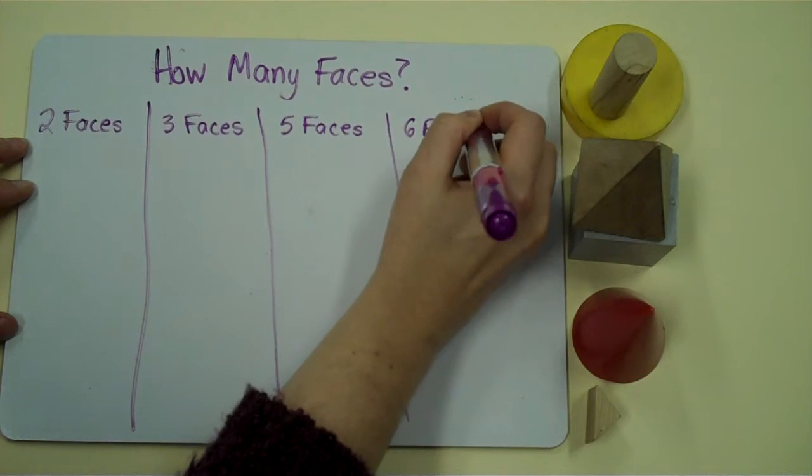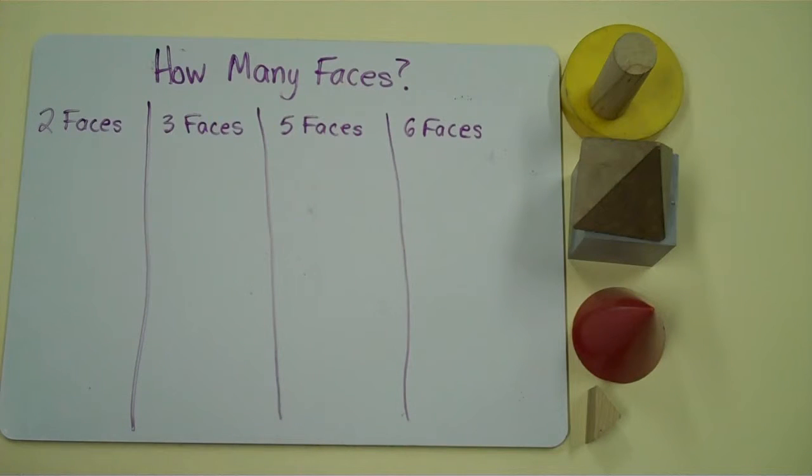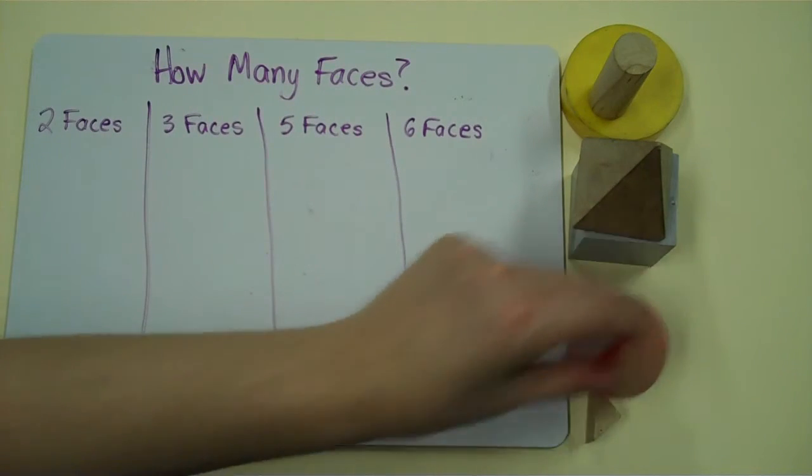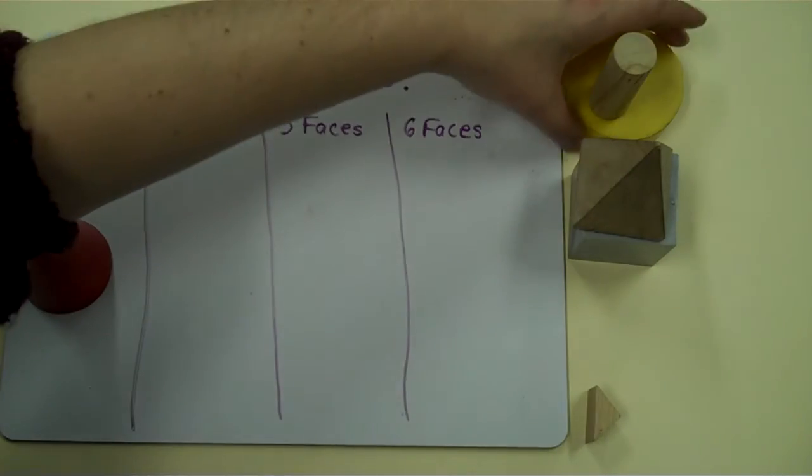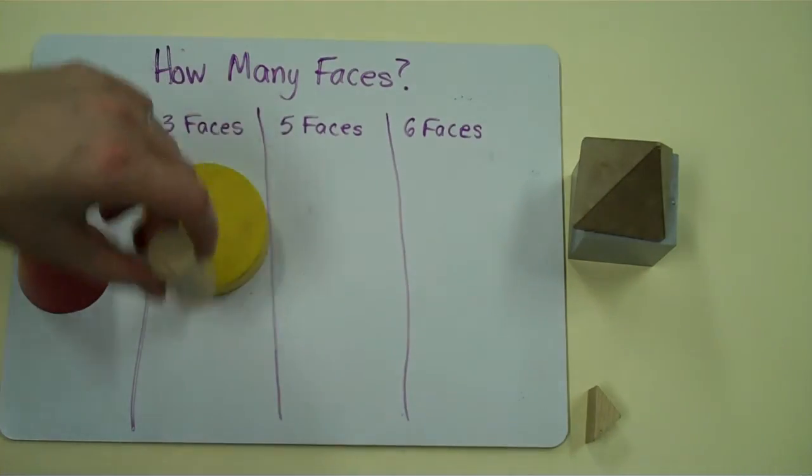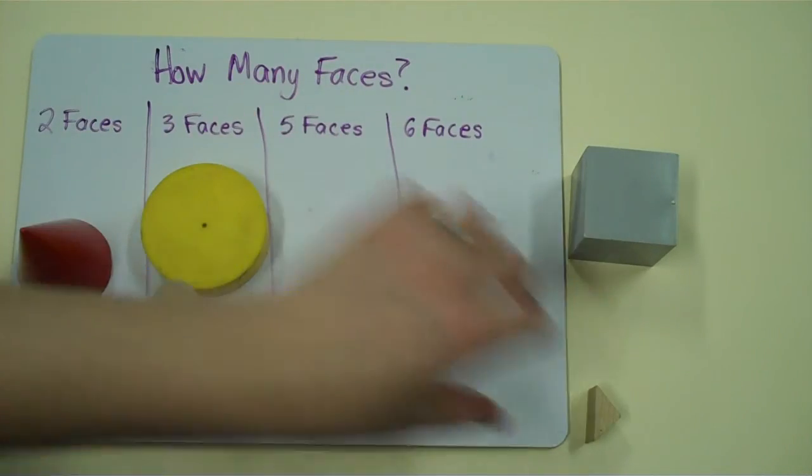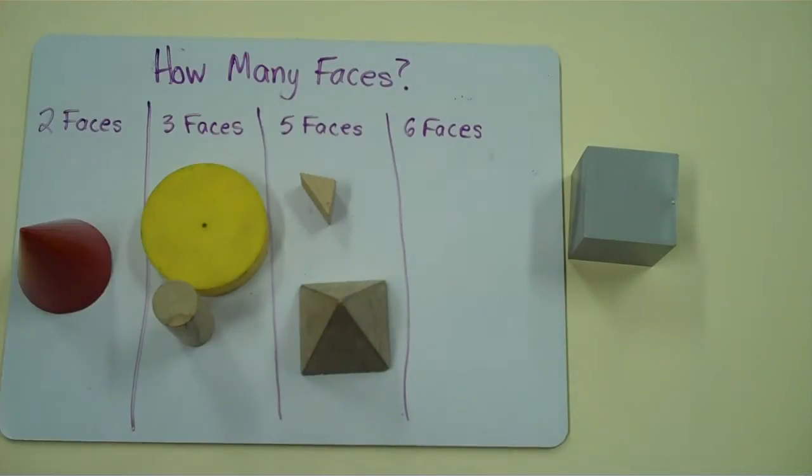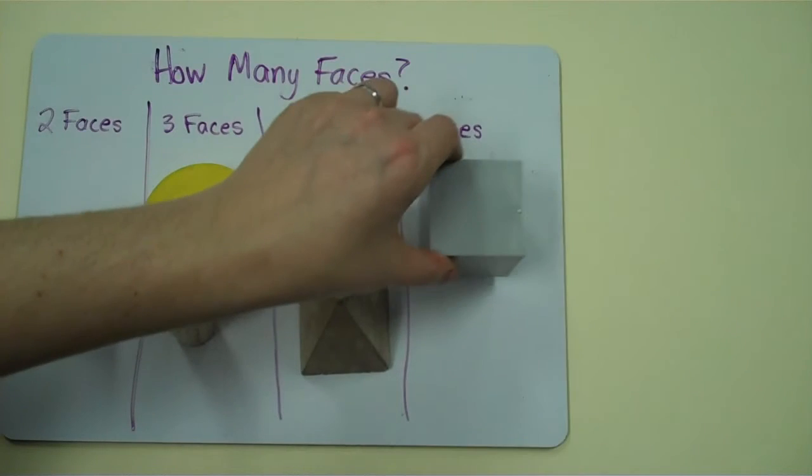I could sort all my objects by having more groups. So my cone has two faces. My cylinders have three faces. I know that these have five faces from the last time I did my sorting. And a cube has six faces.